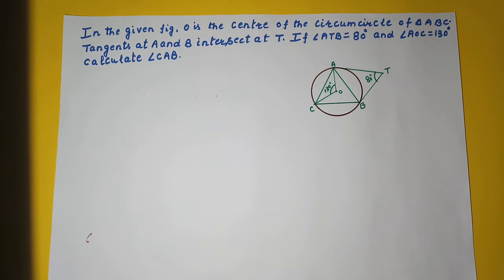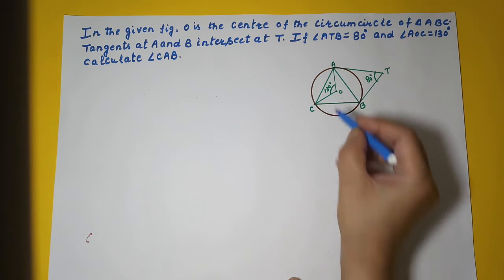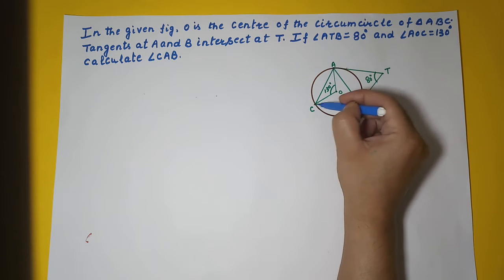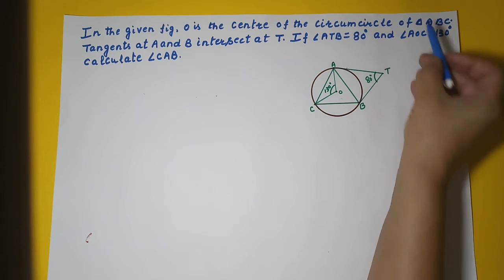In this video we are continuing with the tangent properties of circles. In the given figure, O is the center of the circumcircle of triangle ABC.